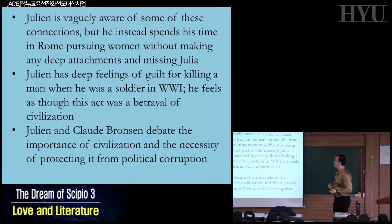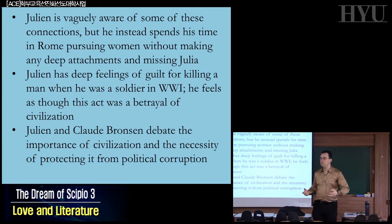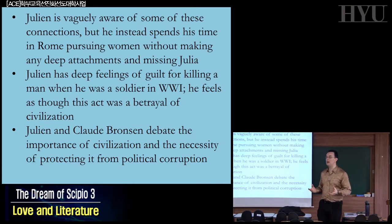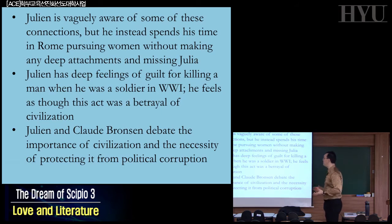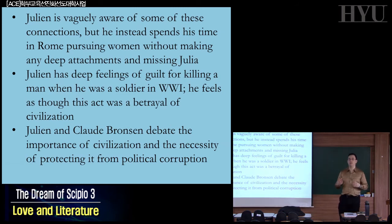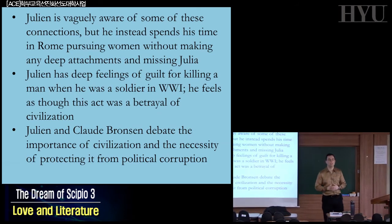We see that Julian gets together with Claude Bronson, who is Julia's father, and they have a number of very important conversations. In this part, they debate the importance of civilization and how it's got to be protected — how it's always in danger of being corrupted, of bad people taking over, of people being too complacent. Both Julian and Claude ultimately seem to agree that civilization is something that needs to be protected.